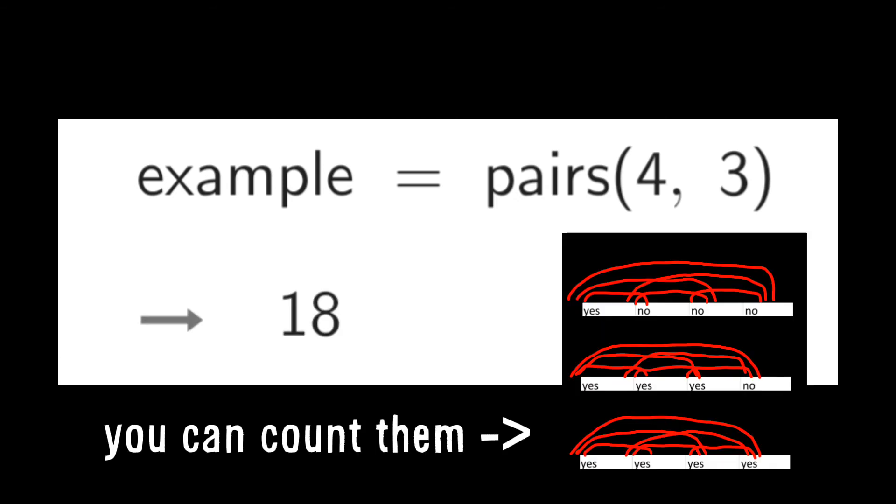For example, if we have 4 objects to compare and 3 ways we give them properties, the formula gives us 18 possible pairs, and that's right.